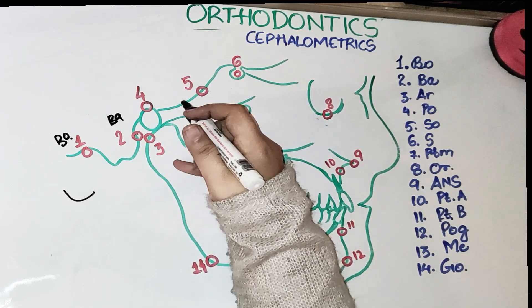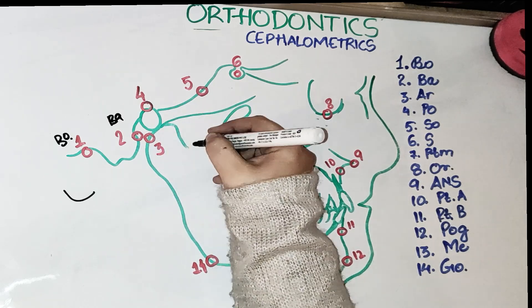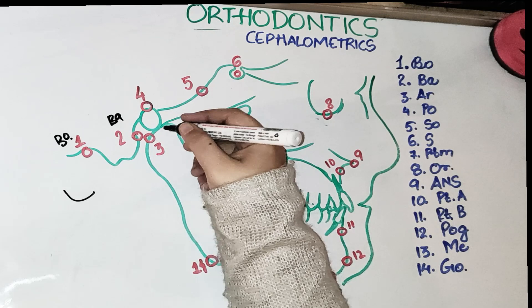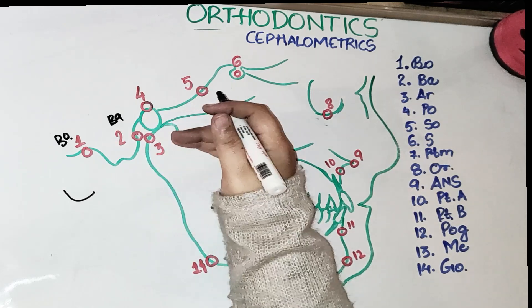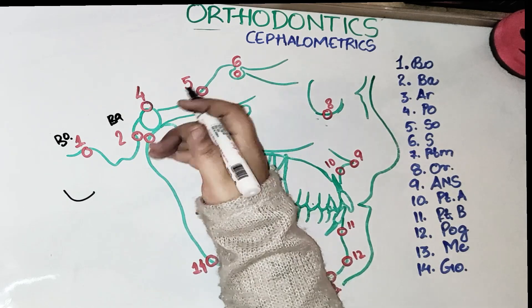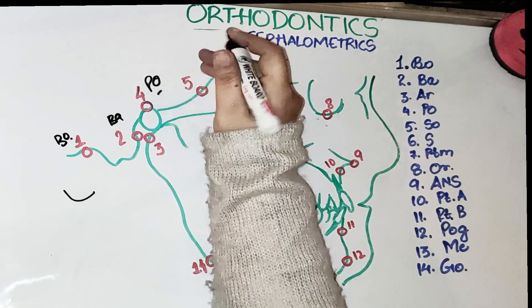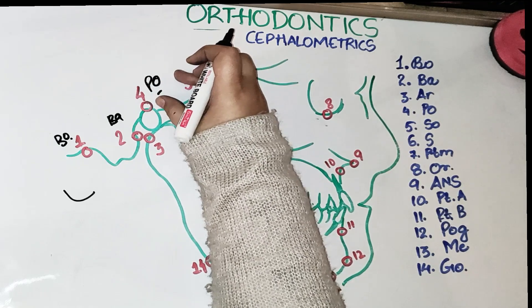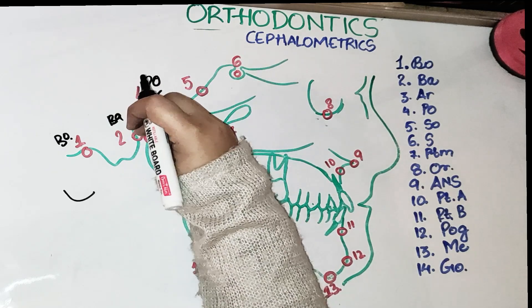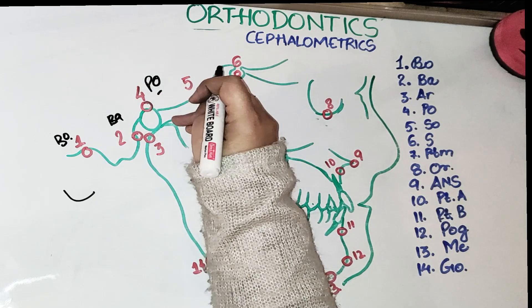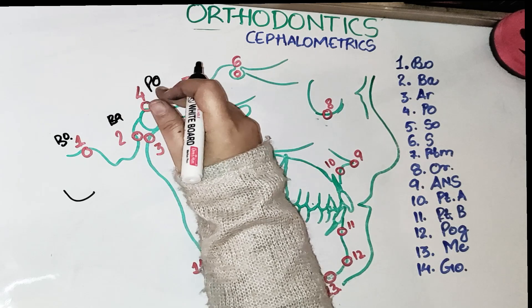The third point is Articulare, which is present on the posterior contour of the condyle. It is actually the point intersecting the posterior cranial base and the posterior contour of the condylar process. The fourth point is the Porion point, which is used in the Frankfurt horizontal plane. Porion is the uppermost point on the upper margin of the external auditory meatus.